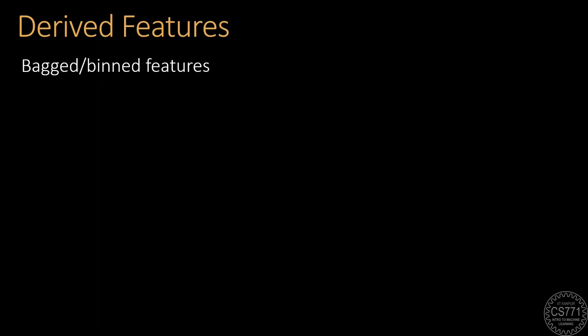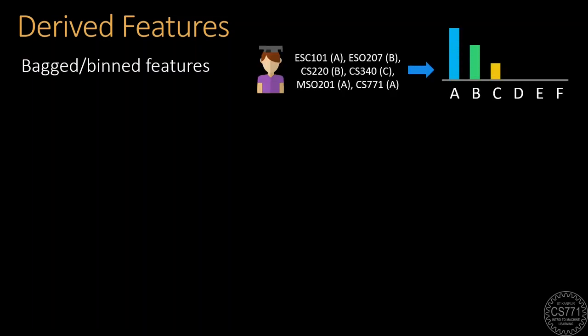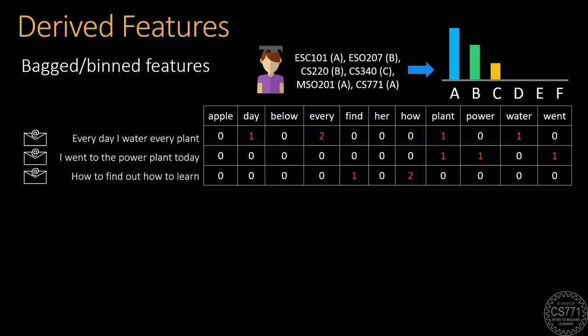For example, we could have bagged or binned features instead of reporting the grades of a student for every course they have taken. We can just count how many A's they have gotten, how many B's have gotten, and so on and so forth. Another very popular class of bagged features are bag of words features where a sentence would be represented as a vector of the dimensionality of the vocabulary of the language with the counts of all the words appearing in the sentence being represented.